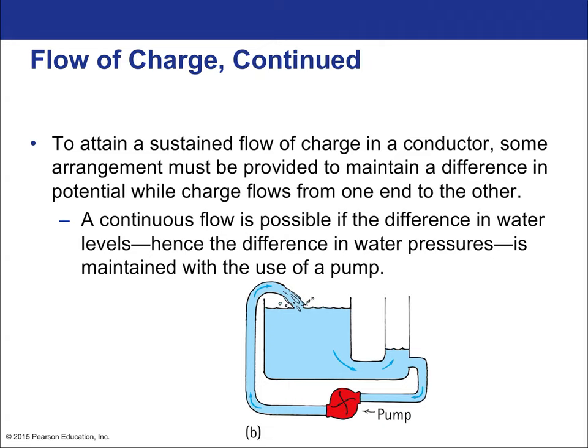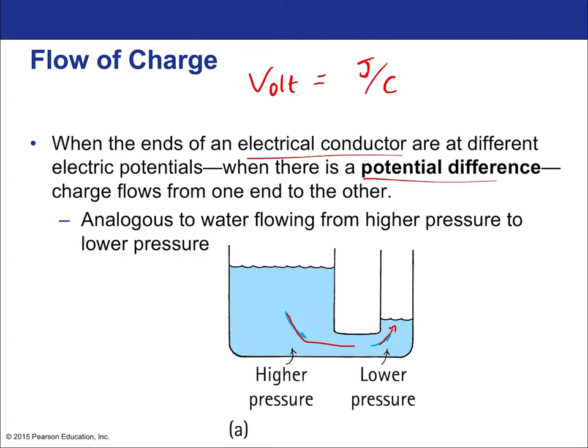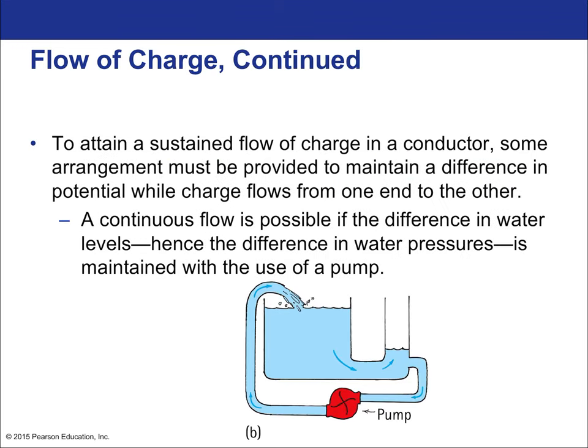If you want a sustained flow you wouldn't just have unequal levels of a U-shaped tube and then have it reach equilibrium. Instead you need a pump, because that way you can keep the high-pressure zone and thus keep the water flowing the whole time — like a fountain. So to attain a sustained flow of charge in the conductor, some arrangement must be provided to maintain a difference in potential while the charge flows. Continuous flow is possible if the difference in water pressure is maintained with the use of a pump — so we need an electric pump.